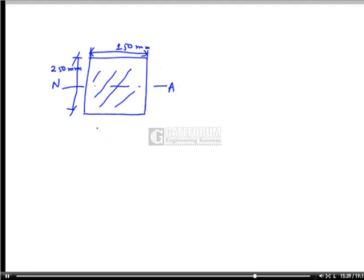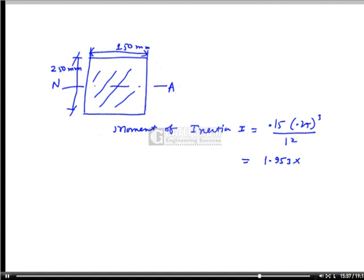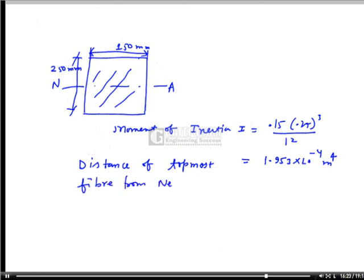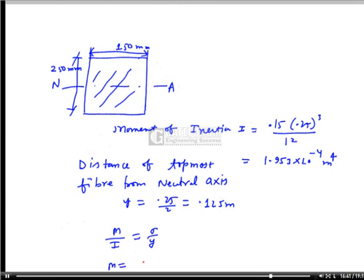The moment of inertia is I = 0.15 × (0.25)³ / 12 = 1.953 × 10⁻⁴ m⁴. The distance of the topmost fiber from the neutral axis is y = 0.25/2 = 0.125 m. Using the bending formula M/I = σ/y, the allowable moment M = σ·I/y.